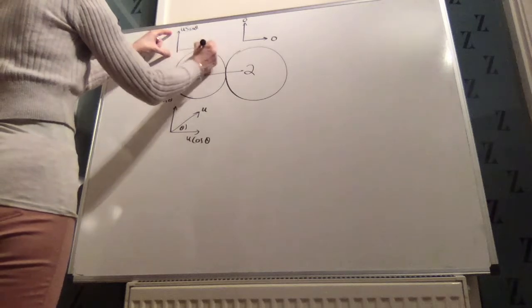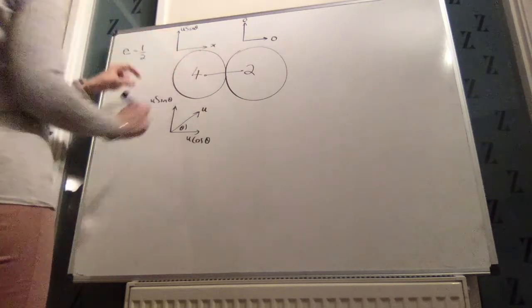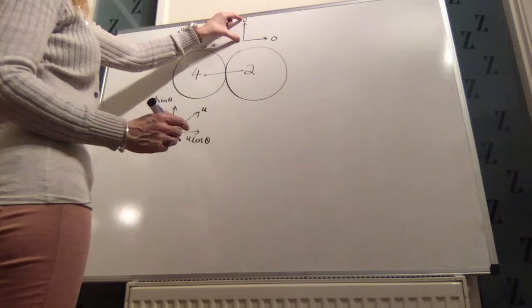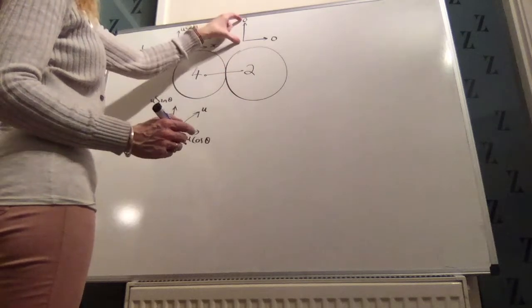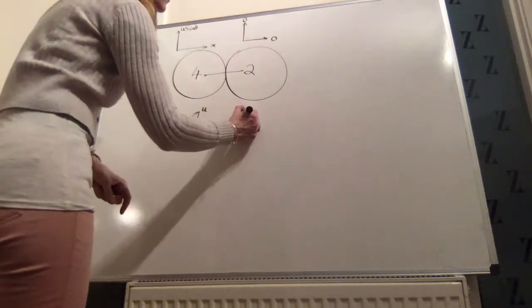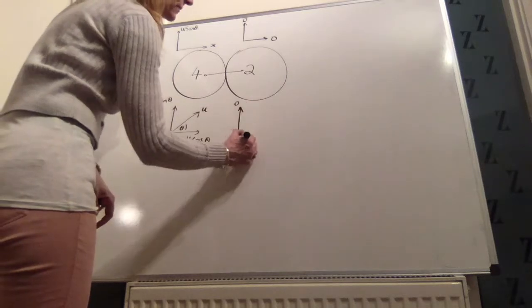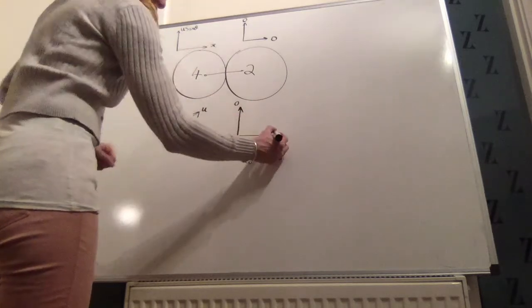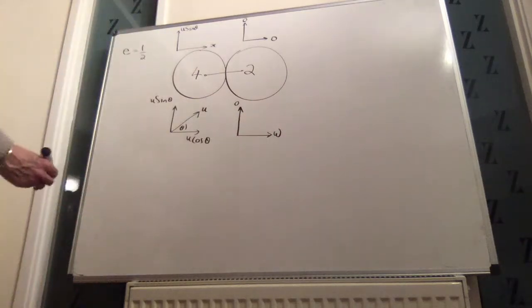This we will call x. The velocity doesn't change in the direction perpendicular to the line of centres. So if that ends up being 0, it must have been 0 beforehand, because there is no change. We'll call that w.